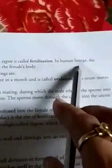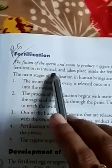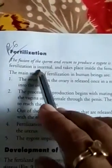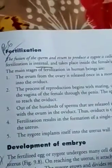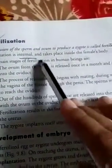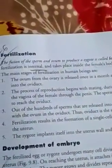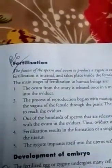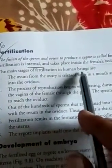In human beings, fertilization is internal, meaning it takes place inside the female body. That is why it is known as internal fertilization. The main stages of fertilization in human beings are as follows.